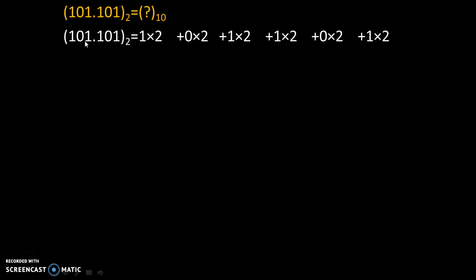Now positional weight starts with the decimal point. So this 1 has 0th positional weight. This 0 has 1st positional weight. This is having 2nd positional weight and so on.